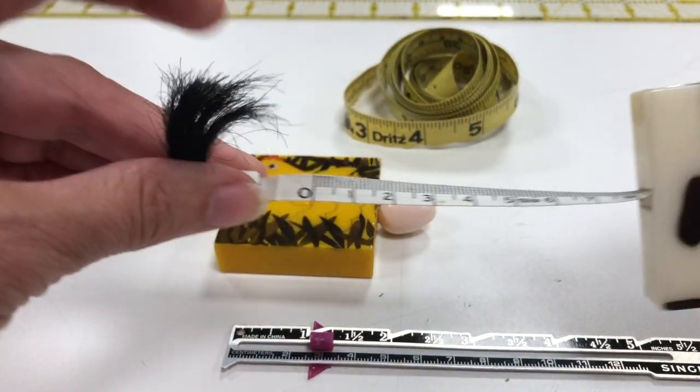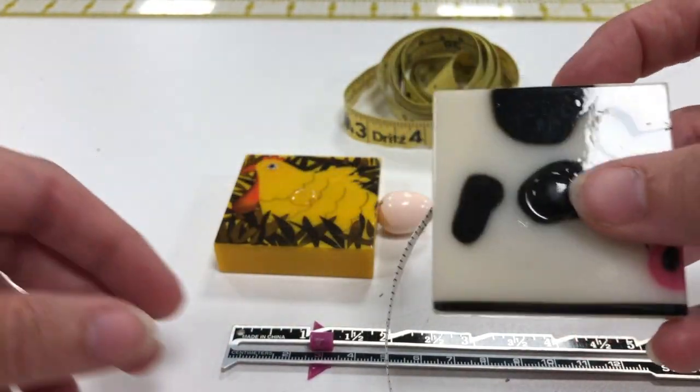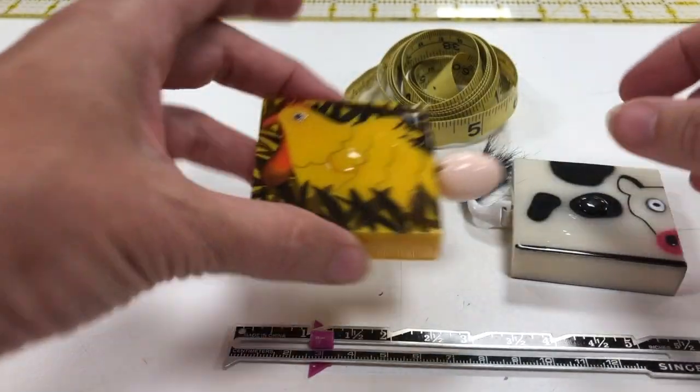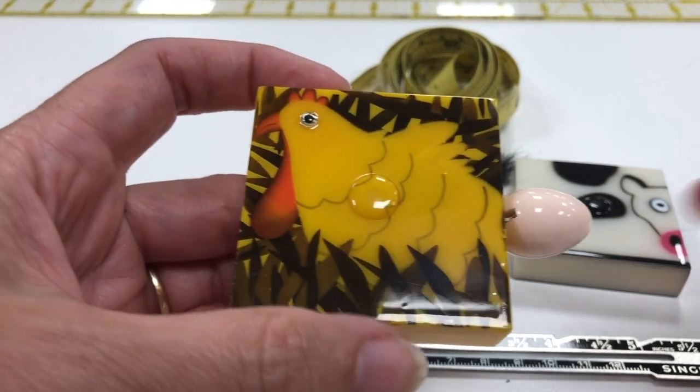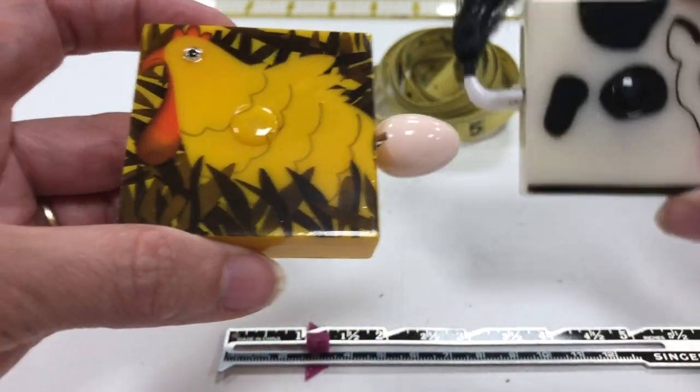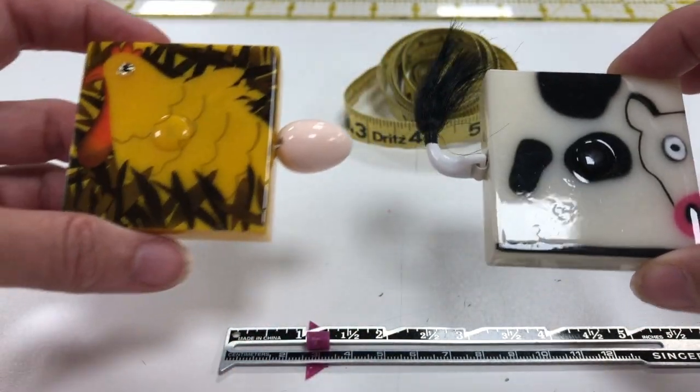And these are different measuring tapes that I got. The cow has a button there and the tail flips up and this is my chicken and the chicken has an egg. So that's the cow tail measuring tape and the chicken and the egg.